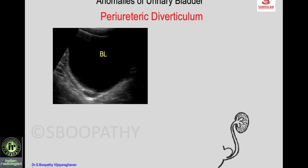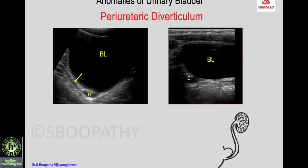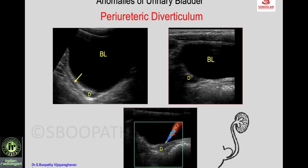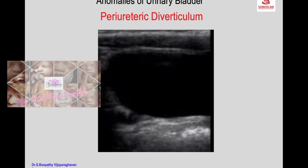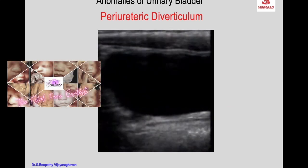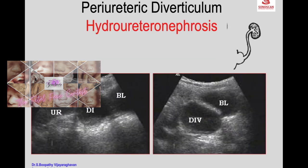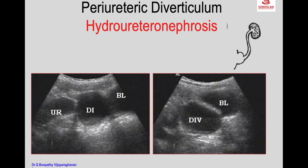In the periureteric diverticulum, you see the bladder and lower ureter with a diverticulum close to the ureterovesical junction. On transverse scan, the diverticulum is distended, and color Doppler shows the ureteric jet very close to the diverticulum, confirming it is a periureteric diverticulum. A video demonstrates distension and emptying of the periureteric diverticulum, which can also cause obstruction to the ureter.